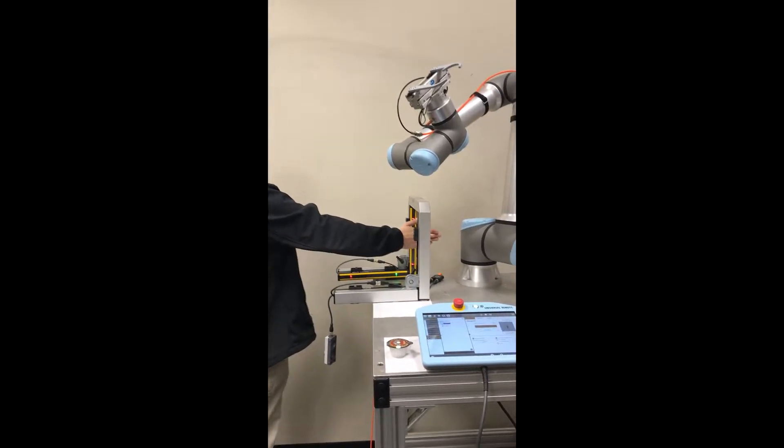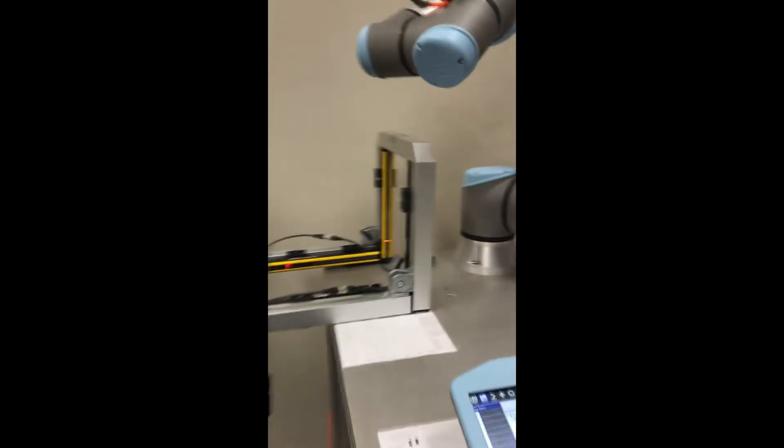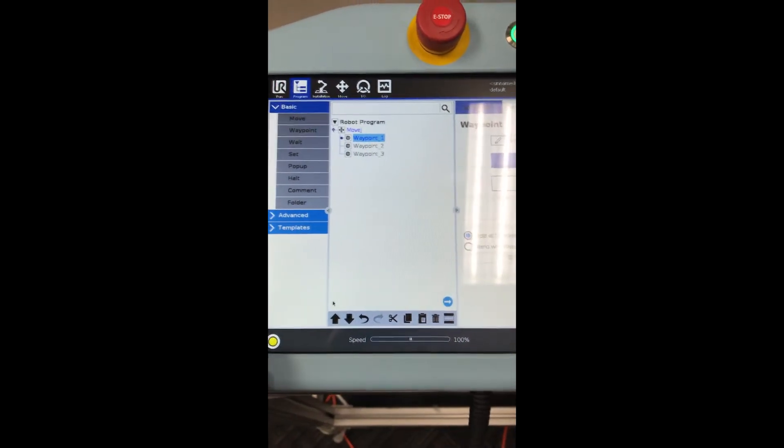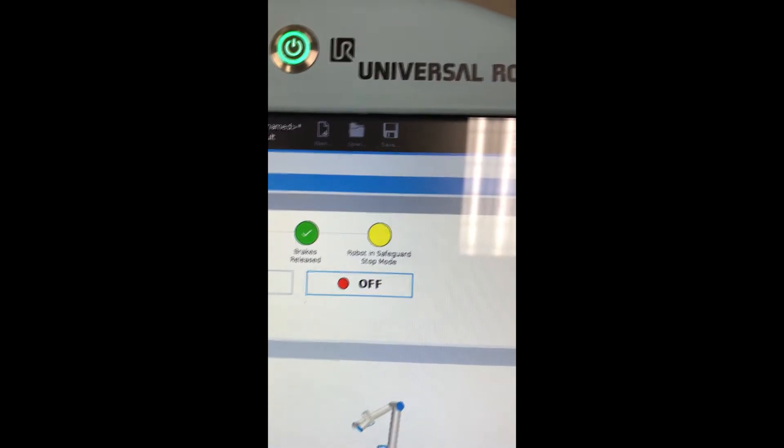So we now have triggered the safety light curtain. You see the LEDs turning red. We come over to the universal robot controller. In the bottom left we have the yellow indication light letting us know that we have a safeguard stop.